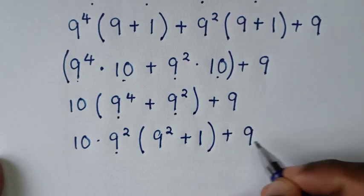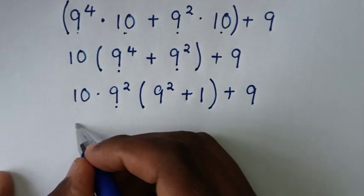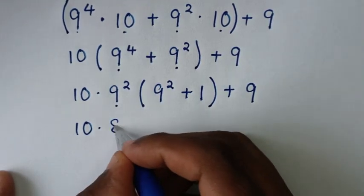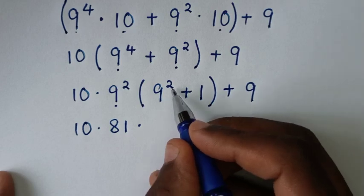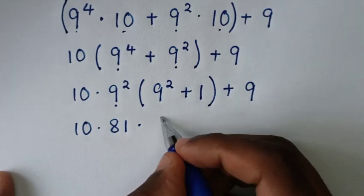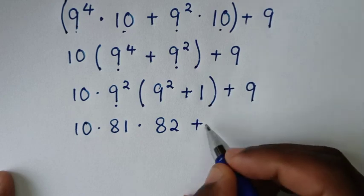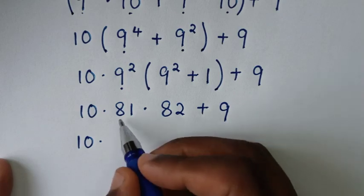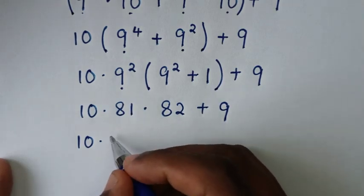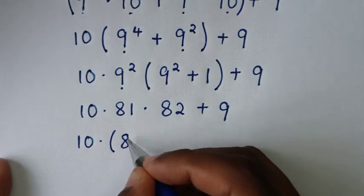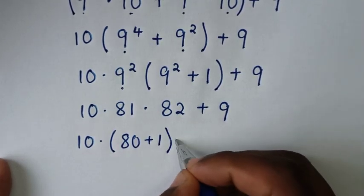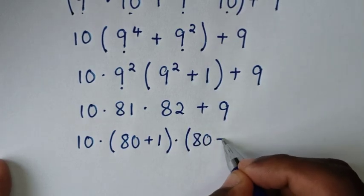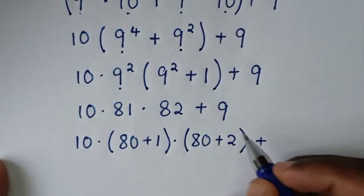Then plus this 9, times 9 power 2 — that is 9 times 9, which is 81. So 9 power 2 is 81. Then 81 plus 1 is 82. Then plus this 9. Then it will be 10 times — from here 81, which is the same as 80 plus 1 — so bracket (80 plus 1) times 82, where 82 is the same as (80 plus 2). Then plus this 9.